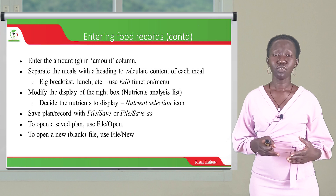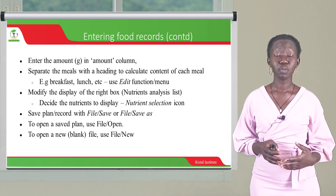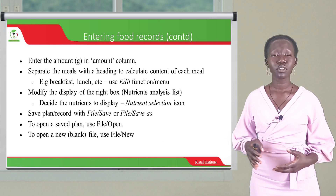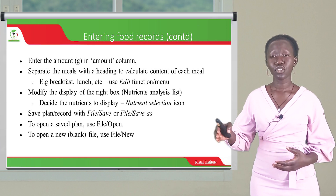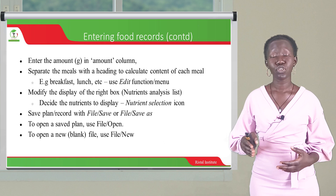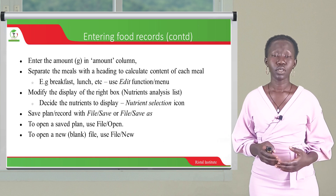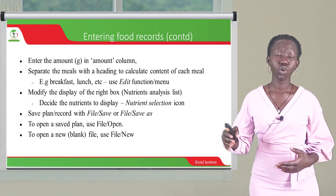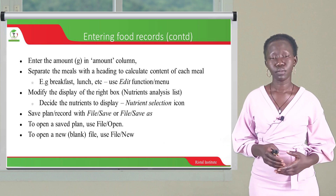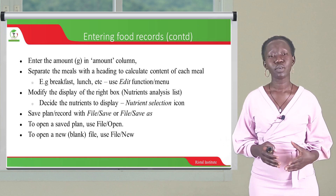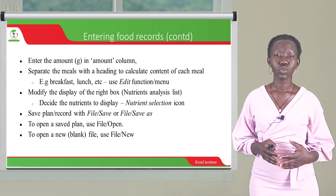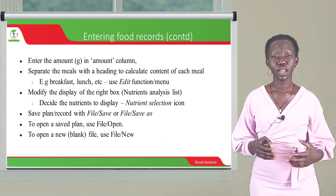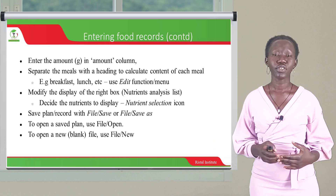When you enter a food item, you have to be mindful to also enter the amount, because it is from the amount that the extent of the nutrients in that food item will be analyzed. You enter the amount into the amount column, just next to the food column. It is also important to separate the meals with a heading to calculate the content of each meal — for example, breakfast, lunch, dinner, or supper.